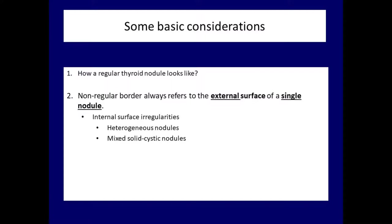In everyday practice, there are two situations in which we have to deal with internal borders of a nodule: in cystic and in heterogeneous nodules. The borders and shape of the solid part of a mixed cystic-solid nodule can have greater relevance, but sharp protrusions in the surface of the solid part should not be interpreted as irregular margins because they are located internally. Similarly, irregularities of the internal surface of a heterogeneous nodule should not be held as irregular nodule margins.